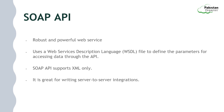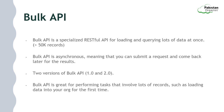Bulk API is a specialized RESTful API for handling large volumes of data at once. It can load or query more than 50,000 records. Bulk API is designed for large volumes and is asynchronous, meaning you can submit a request and it will handle the data in batches. Once completed, you can come back later for the results and check if the job has been completed using a Bulk API query. There are two versions: version 1 and version 2. In the demo, I will be showing version 2.